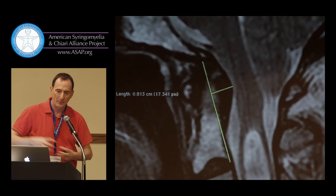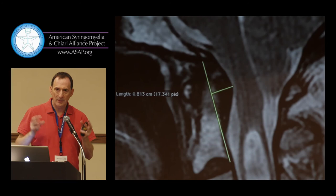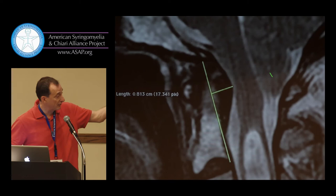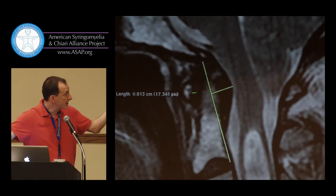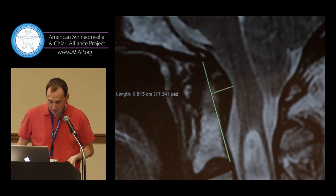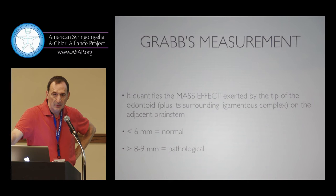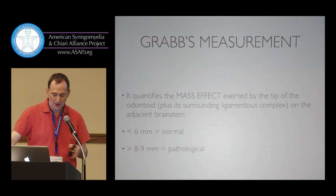The brainstem is a very important pipeline of information from the brain to the periphery and vice versa, with many nuclei within it — a very important structure. It's being pushed from behind by the tonsils and from the front by the odontoid. The tonsils have a piston effect going up and down, first described by Dr. Morasko with Doppler ultrasound at NIH. The odontoid, especially in people with connective tissue disorders, has a back-and-forth and up-and-down effect with cranial settling. Less than 6 mm is normal for the GRAB measurement; above 8–9 mm is considered pathological.